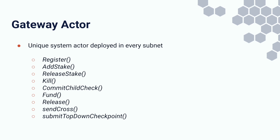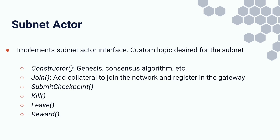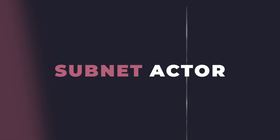One of the most important security requirements is the firewall property: the impact of a compromised child subnet is limited to at most the circulating supply of tokens in that network — it's not possible to withdraw more native tokens than were used to fund the subnet. This firewall property is enforced by gateway actors in the parent subnet. The gateway actor interface includes functions such as register, stake, release, kill, commit child checkpoint, fund, release, send cross message, and submit top-down checkpoint, divided into subnet management and cross-network messaging groups.